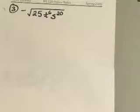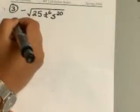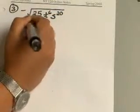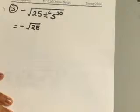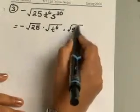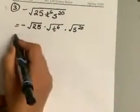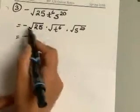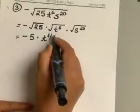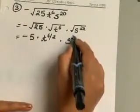So you have negative square root of 25, t to the 6th, s to the 20th power, and we are trying to put this in a simplified form. So we'll go ahead and rewrite this, break it up into square root of 25, square root of t to the 6th, and square root of s to the 20th, using our product rule. Now we know square root of 25 is 5. For the variables, go ahead and convert these into rational exponents.